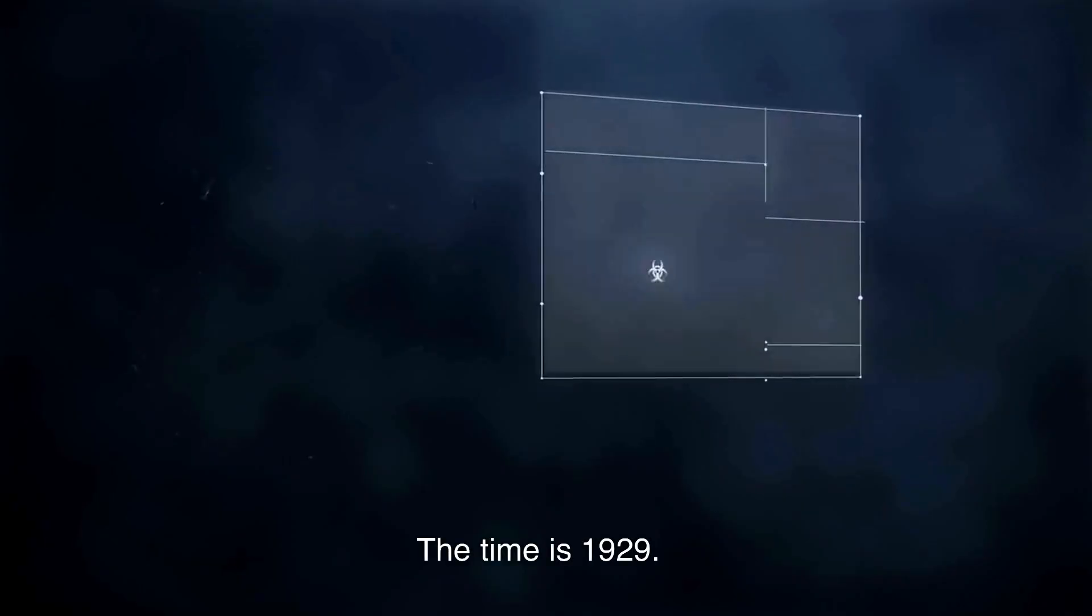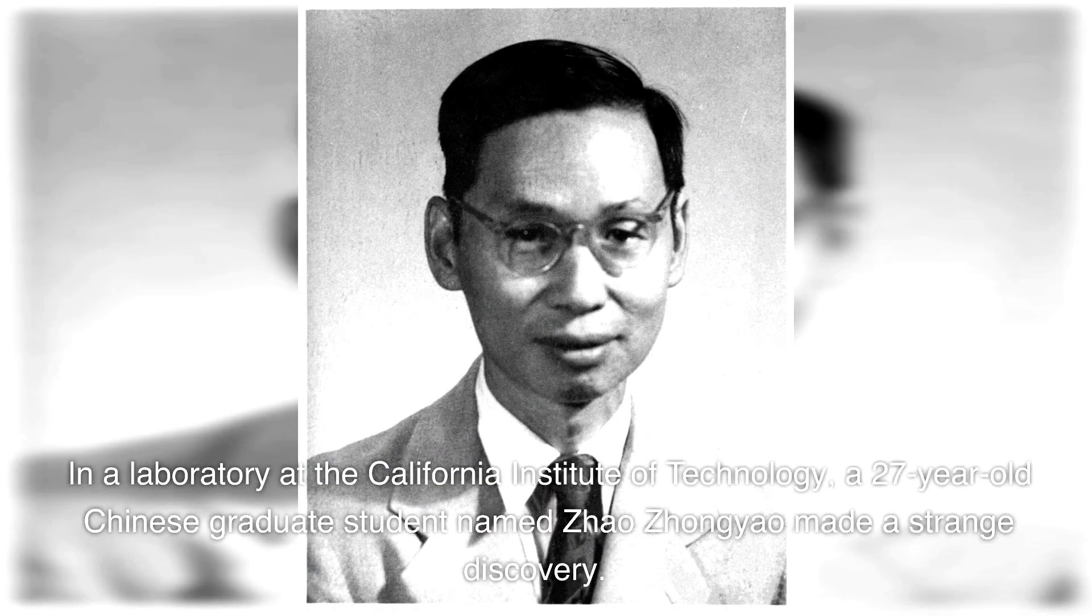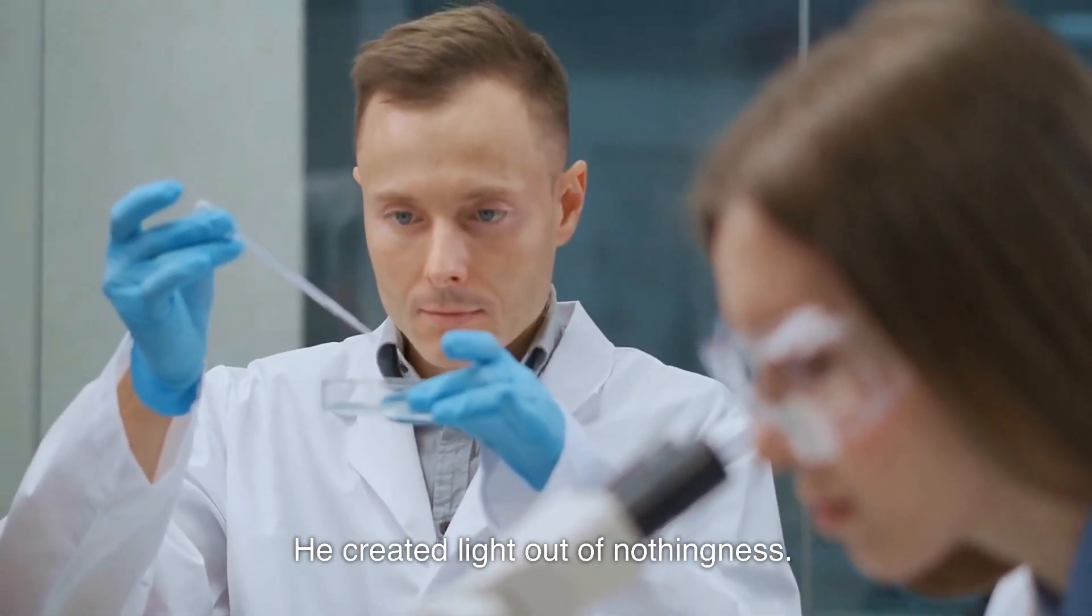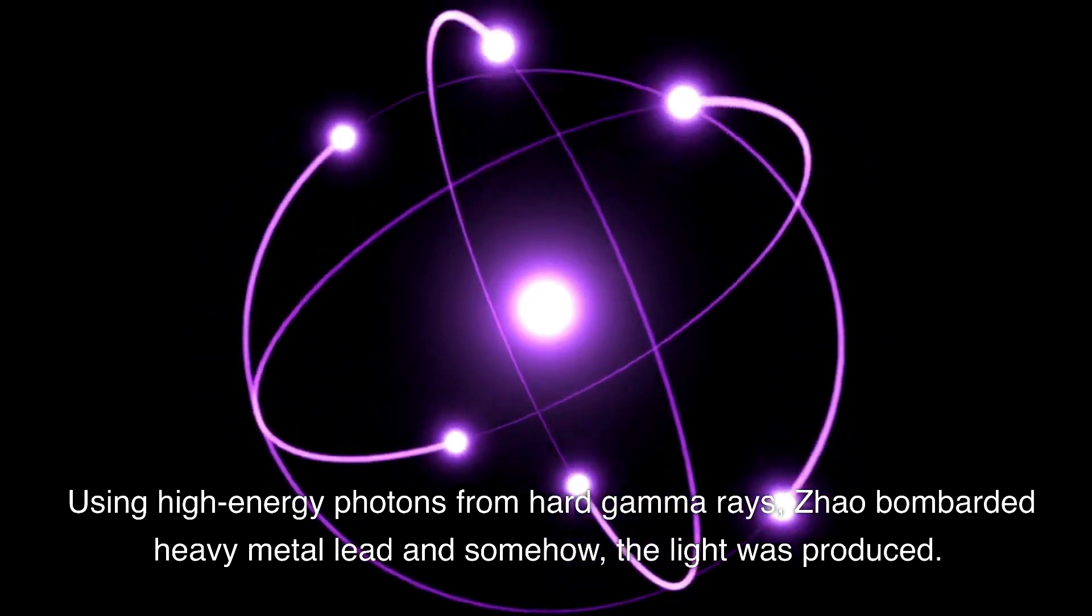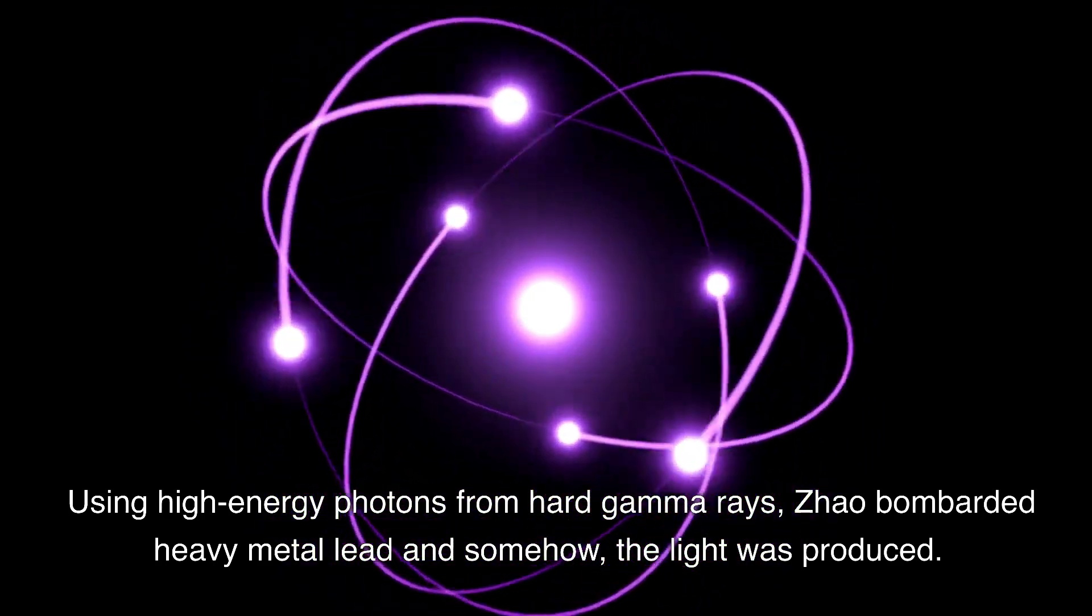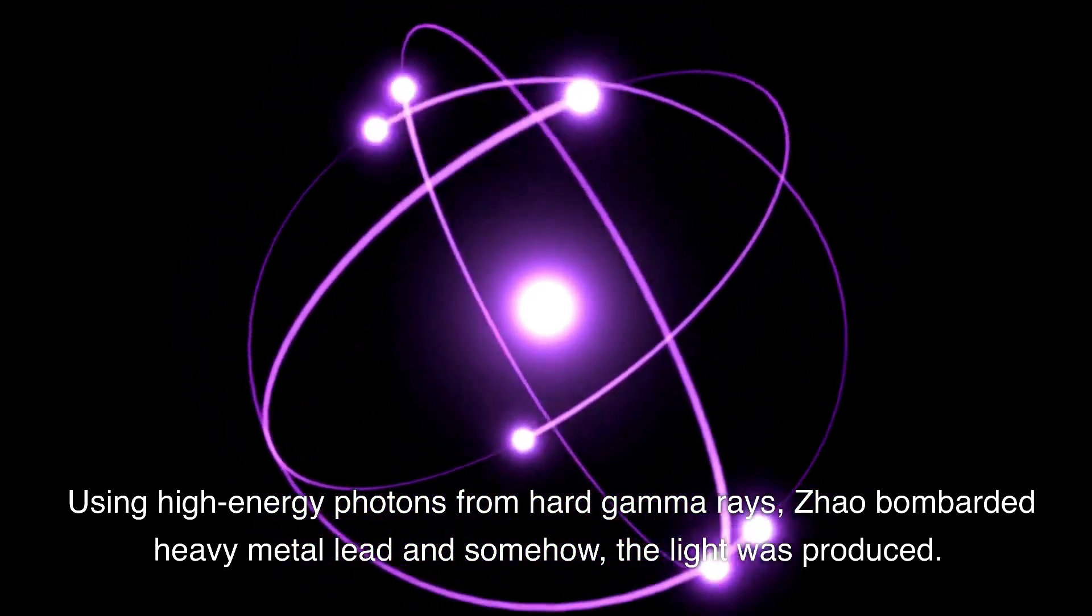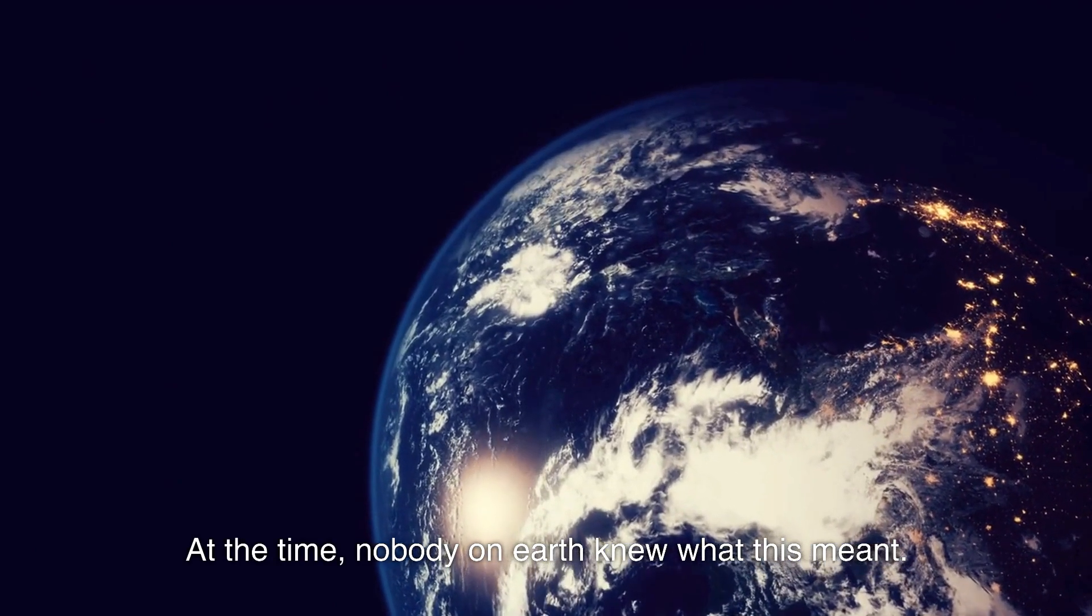The time is 1929. In a laboratory at the California Institute of Technology, a 27-year-old Chinese graduate student named Zhao Zhongyao made a strange discovery. He created light out of nothingness. Using high-energy photons from hard gamma rays, Zhao bombarded heavy metal lead, and somehow the light was produced. At the time, nobody on Earth knew what this meant.